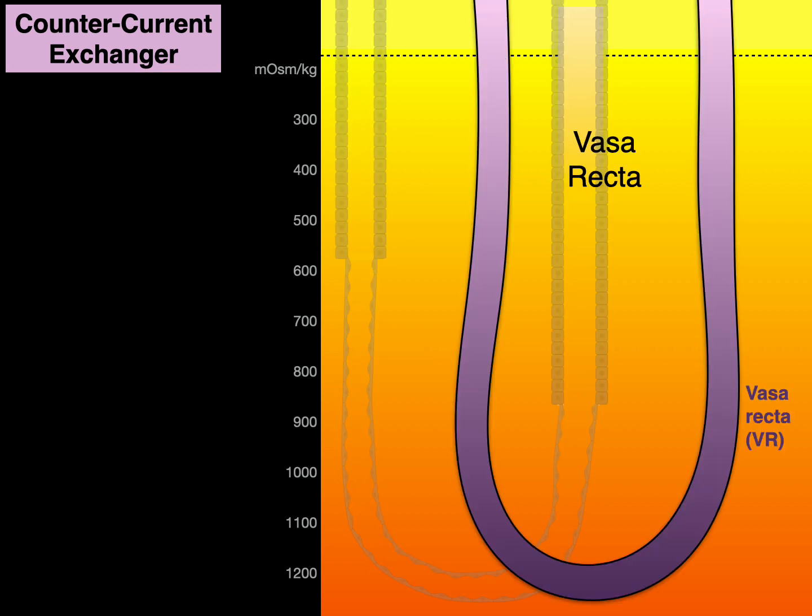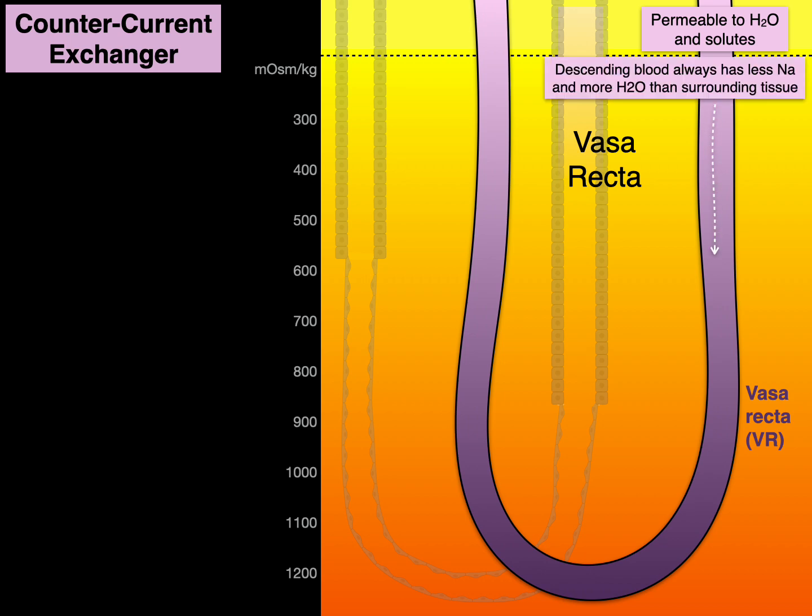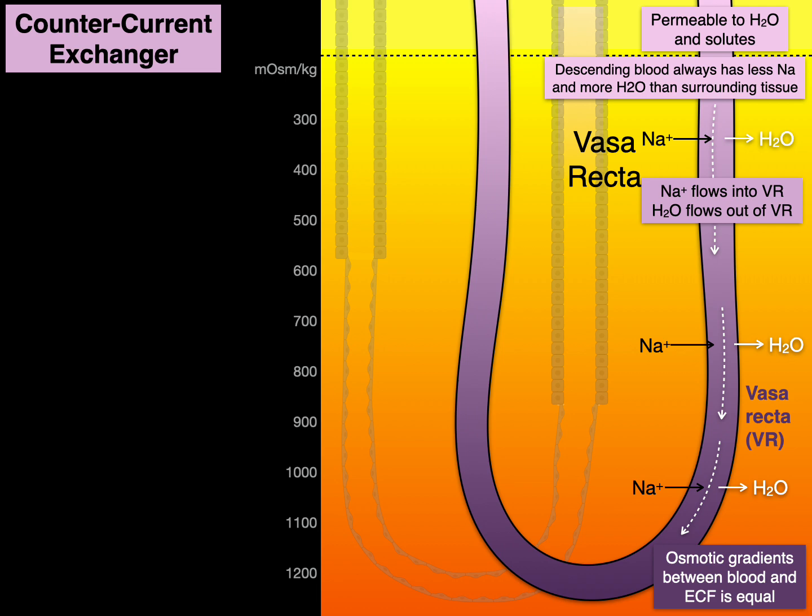Now let's put to the side the vasa recta there in purple. The vasa recta, it's a capillary, though it's more width-wise like a venule, but it's a capillary, which means it's permeable to water and solutes. And the descending blood in the descending limb of the vasa recta always has less sodium and more water than the surrounding tissue. As a result, sodium will go into the blood and water will go out. So sodium flows into the vasa recta and water flows out as the blood descends until you hit the very bottom. And the osmotic gradients between the blood and the extracellular fluid is equal.